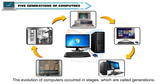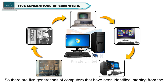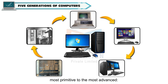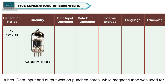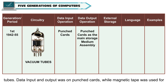The evolution of computers occurred in stages, which are called generations. There are five generations of computers that have been identified, starting from the most primitive to the most advanced. The first generation computers, developed between 1942 and 1955, used vacuum tubes. Data input and output was on punched cards, while magnetic tape was used for external storage.